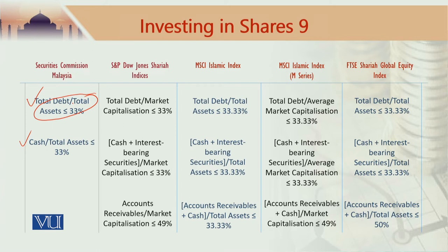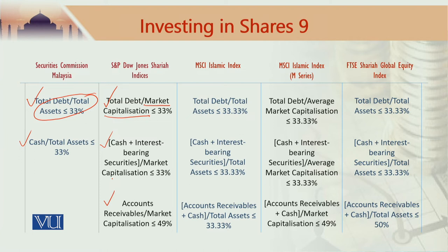S&P Dow Jones Sharia indices use a financial screening methodology which is market cap based. Total debt divided by market capitalization should not exceed 33%. Cash plus interest bearing securities divided by market capitalization should not exceed 33%, and accounts receivables divided by market capitalization should not exceed 49%. This is the methodology of S&P Dow Jones Sharia indices — a market capitalization denominated approach.